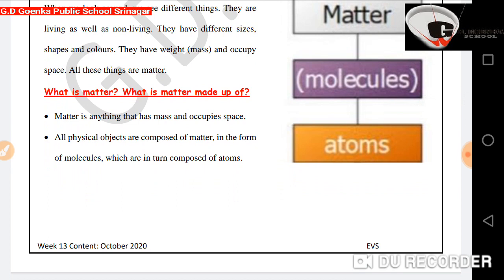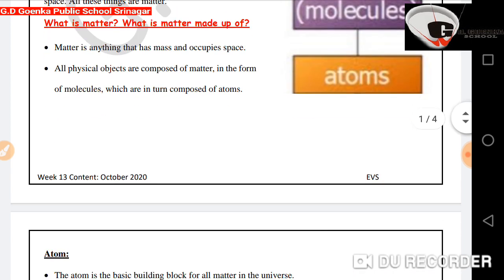What is matter made up of? Matter is anything that has mass and occupies space. All physical objects are composed of matter in the form of molecules, which are in turn composed of atoms.